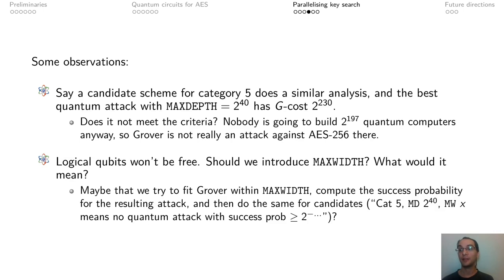Also, we should observe that so far we have assumed that there is no limit to the number of qubits available. But clearly qubits are not free, and so maybe we should consider having a quantity max width. The problem is then that if we have both a max depth and a max width, we might end up in a situation where no probability 1 attack against AES exists. What happens then is that maybe we should be talking about low probability quantum attacks against these schemes.